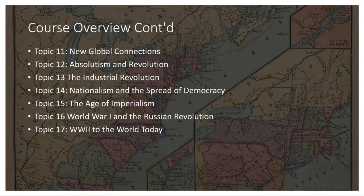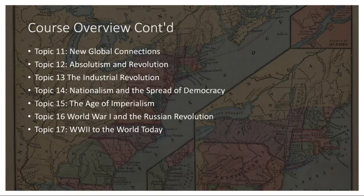Topic 12: Absolutism and Revolution. Absolutism is a system where rulers held all power. It was eventually challenged by movements for individual rights and liberties. The Enlightenment brought new ideas about democracy and human rights. Revolutions like the American Revolution and the French Revolution aimed to overthrow oppressive systems and establish more just societies.